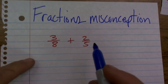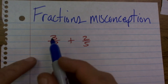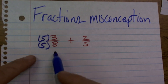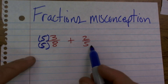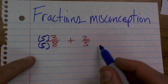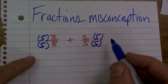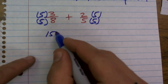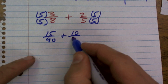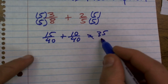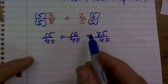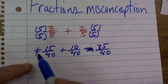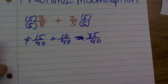A big misconception that a lot of students make is they'll say, how do I get 8 to be 40? Well, I have to multiply by 5. And they remember to keep equivalent fractions, so they multiply the top by 5. But then they forget that 5 needs to be multiplied by 8 to get to 40, and instead they just multiply it by 5 again. So they write 15 over 40 plus 10 over 40 — and that does equal 35 over 40, but that does not equal the correct answer.